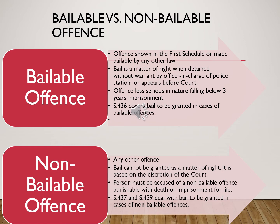In the case of a non-bailable offence, it is any offence which is not a bailable offence. Bail cannot be granted as a matter of right and depends on the discretion of the court. Non-bailable offences are of higher gravity and more serious in nature, punishable with death or imprisonment for life. Sections 437 and 439 deal with the procedure for granting bail in non-bailable offences. An example is murder punishable under Section 302.